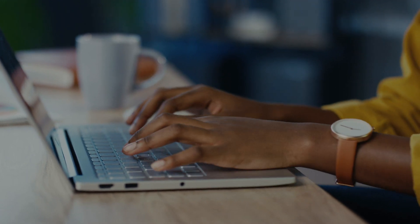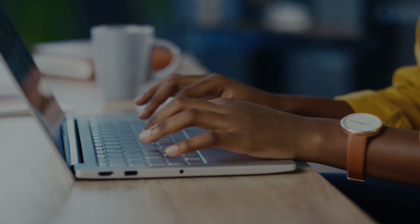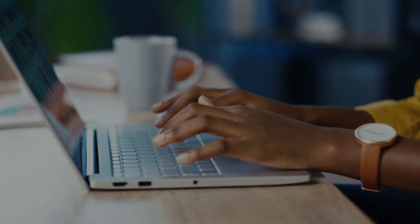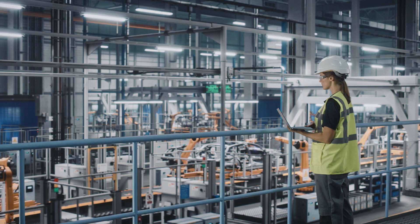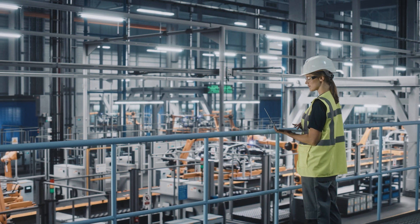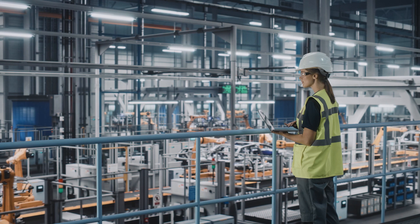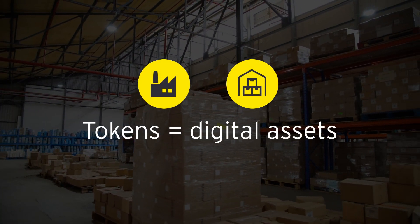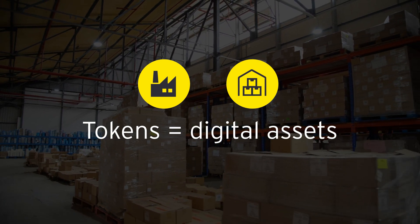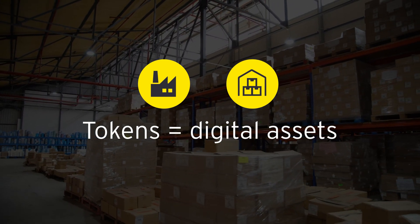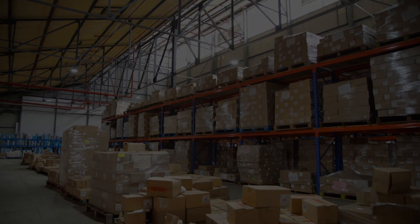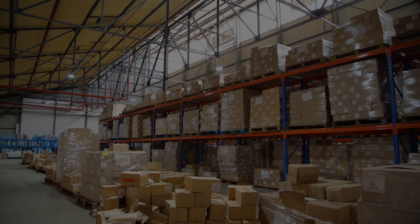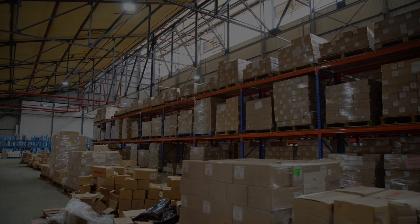Blockchain was created to manage digital scarcity and maintain state among a community of participants who do not know, trust, or even interact with one another. The EY team views products, whether they are serialized or not, as individual assets. A convenient term for that finite digital asset is a token. For inventory use cases, we mint tokens on a blockchain that represent our products. Tokens can be created, moved, and consumed. With these simple functions, we can allow for entire supply chains to be created digitally on a common network.